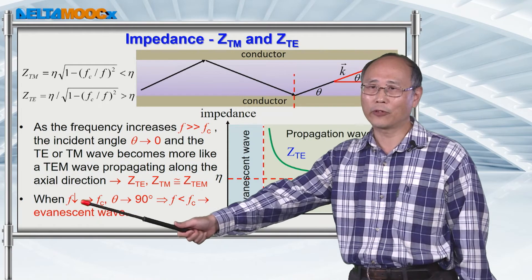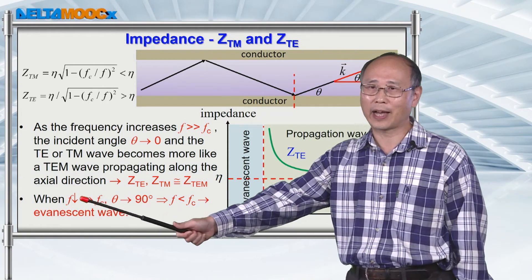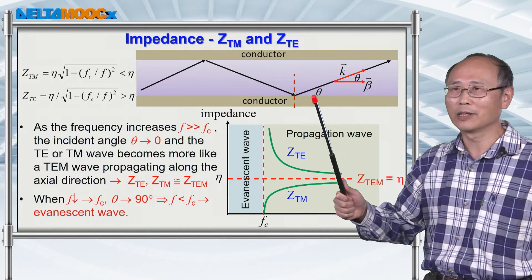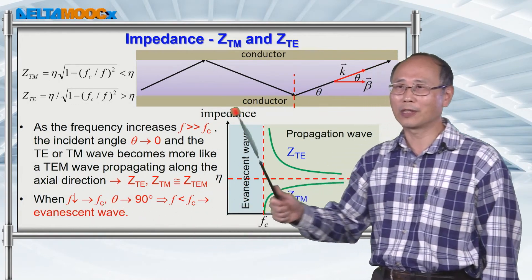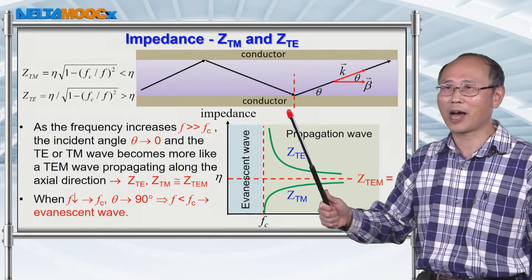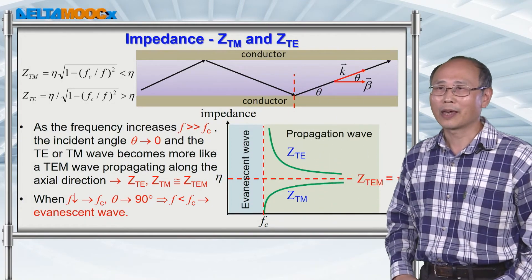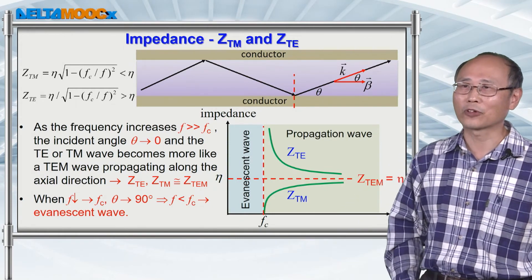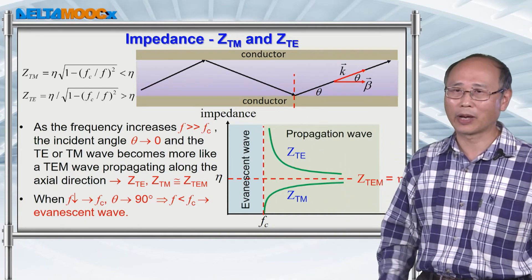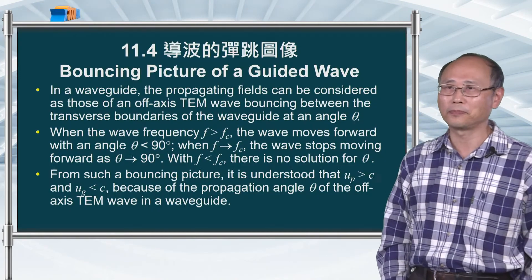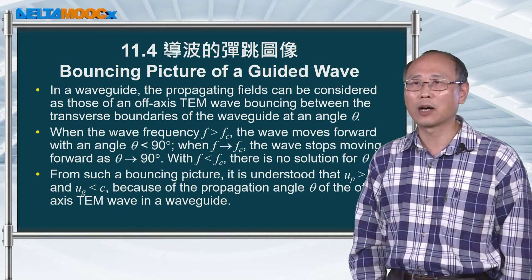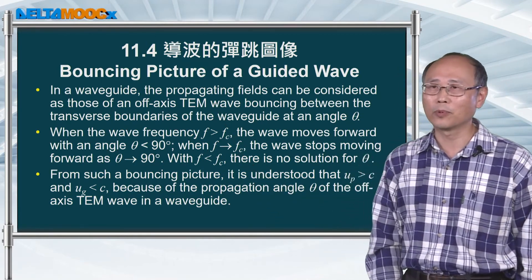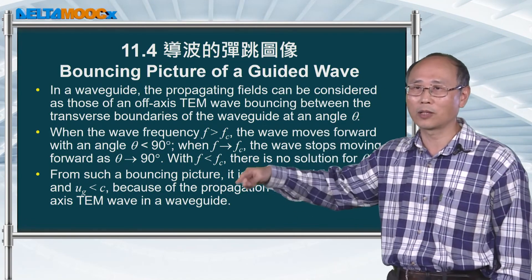To emphasize the physical picture using the bouncing angle: when frequency is larger than the cutoff frequency, the angle θ has a solution. As you continue to increase frequency, the bouncing angle becomes smaller and smaller, so the guided wave approaches a TEM wave. When the frequency moves from the high-frequency side toward the cutoff frequency, the bouncing angle θ approaches 90 degrees, meaning the wave bounces up and down without propagating along z. Once frequency drops below cutoff, you have evanescent waves in the waveguide structure.